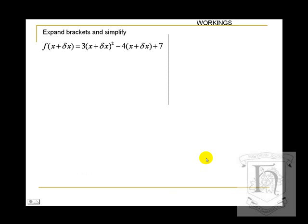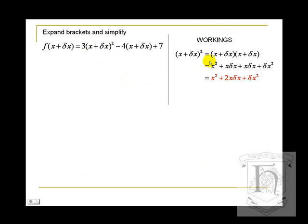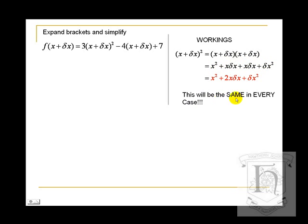We have to expand our brackets and simplify, so we take some workings on the side to look at the more complicated parts. (x + delta x) squared means (x + delta x) multiplied by (x + delta x). Expanding: x squared plus x·delta x plus x·delta x plus delta x squared, which simplifies to x squared plus 2x·delta x plus delta x squared. This result is worth noting carefully.